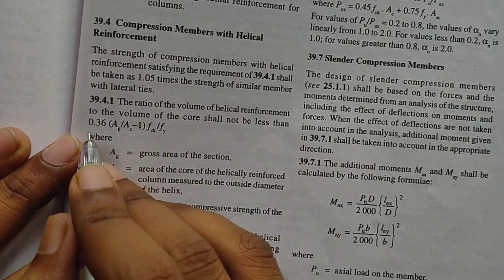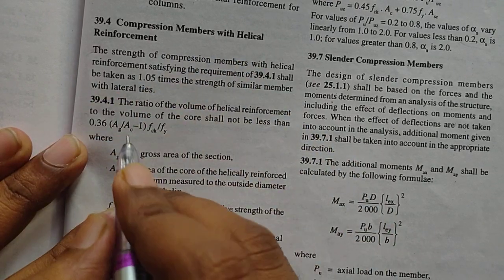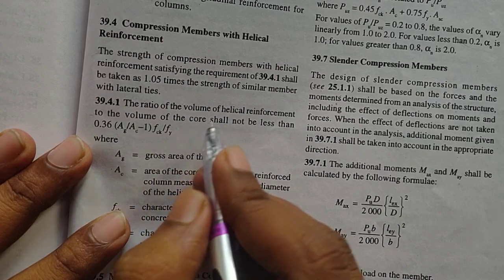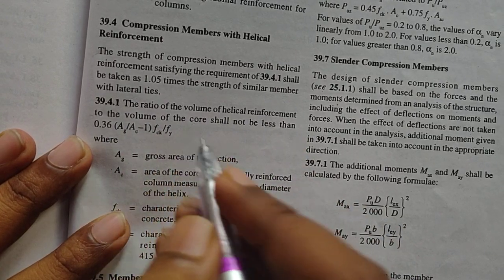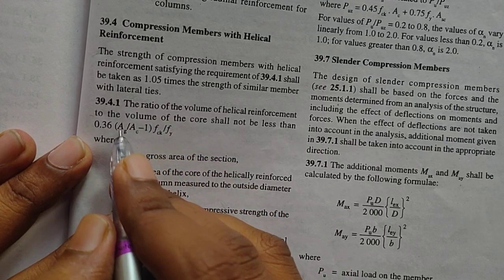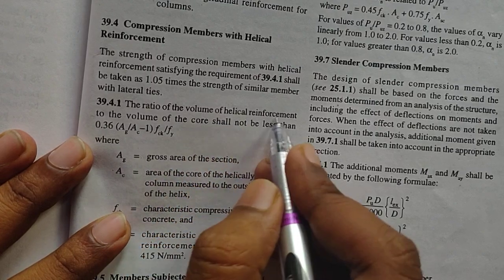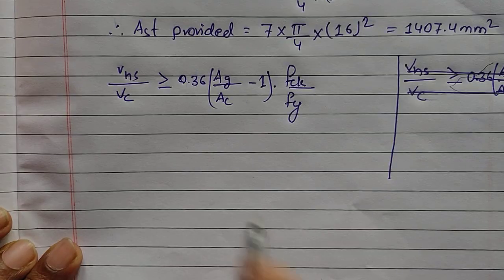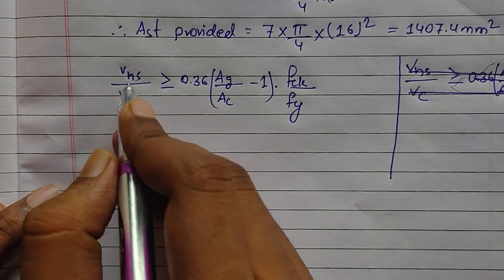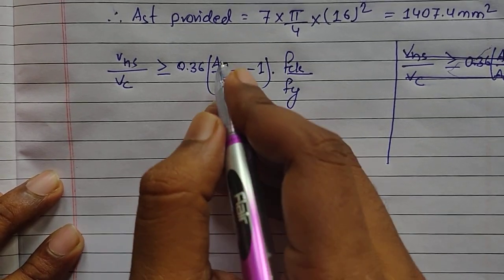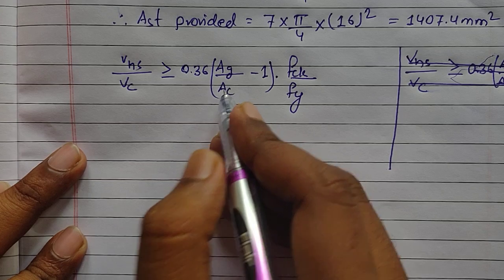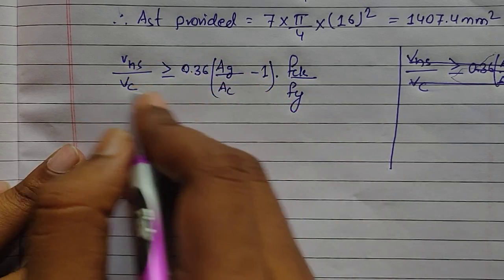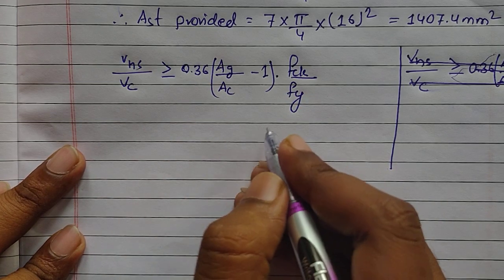As per clause 39.4, helical reinforcement must satisfy the condition: 0.36 × (AG/AC − 1) × (fck/fy) = volume of helical reinforcement / volume of core. I will now find AG, AC, volume of helical reinforcement, and volume of core. Let's draw a diagram to help visualize this.